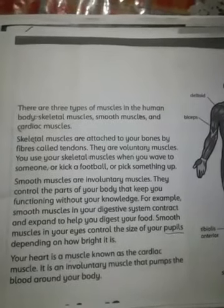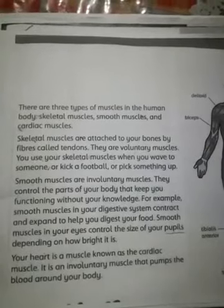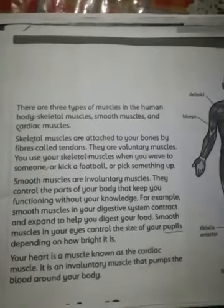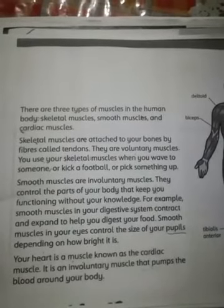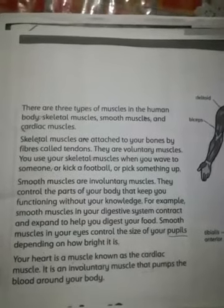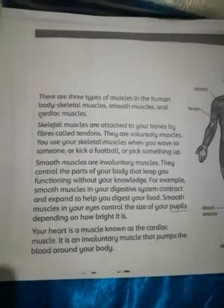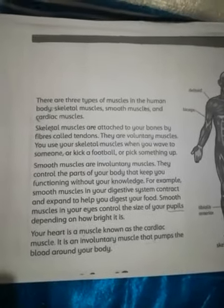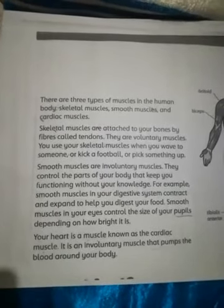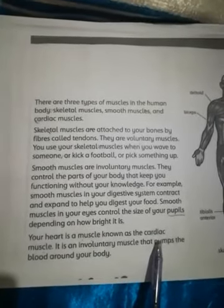Smooth muscles in your eyes control the size of your pupil depending on how bright it is. اب third ہے: your heart is a muscle known as a cardiac muscle. ہمارا heart بھی ایک muscle ہے اور اسے cardiac muscle کہتے ہیں۔ ہمارا heart ہم سے پوچھ کر کام نہیں کرتا — یہ خود بخود کام کرتا رہتا ہے — اسے cardiac muscle کہتے ہیں۔